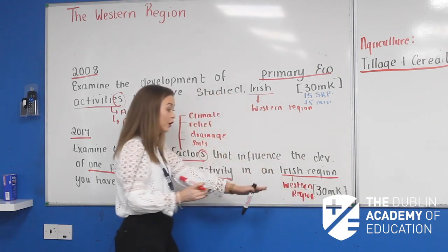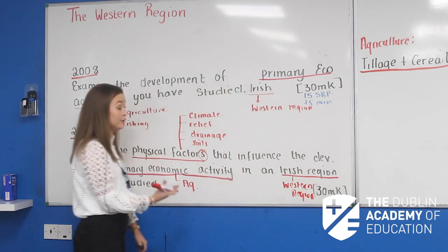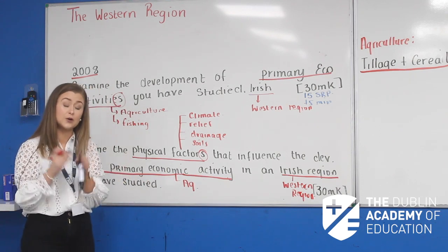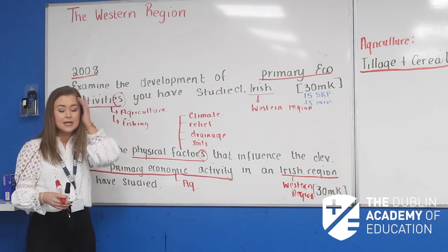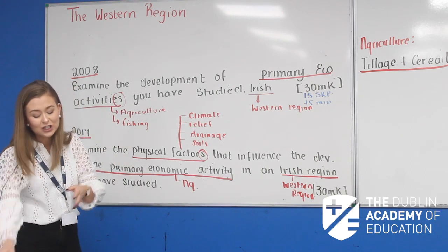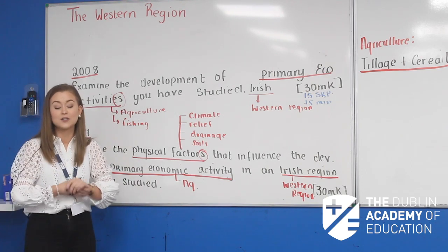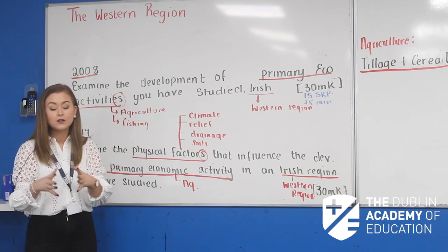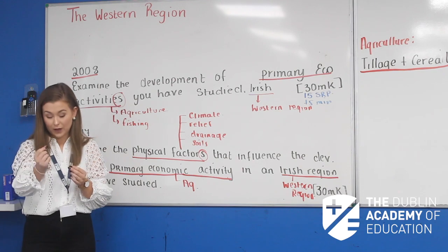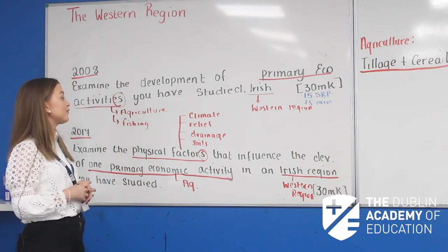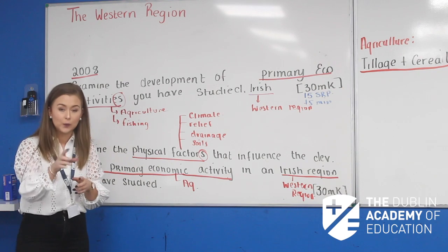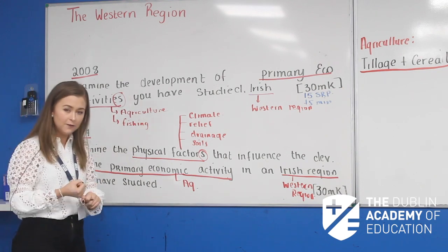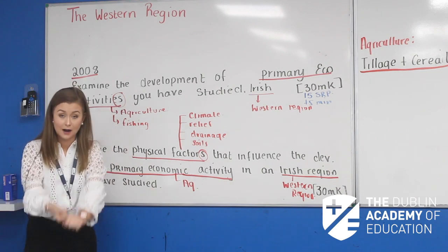Again, 30 marks, 15 significant relevant points, 15 minutes. There's also a 2014 question on your page. It says: account for the development of agriculture in an Irish region — pop 'the western region' above that. It says with reference to two of the following, giving you relief, climate, and market.